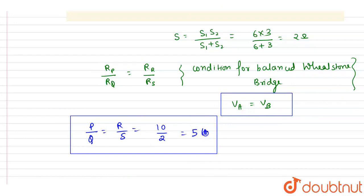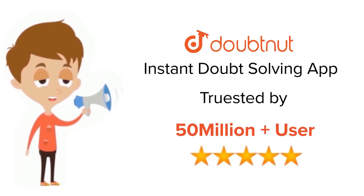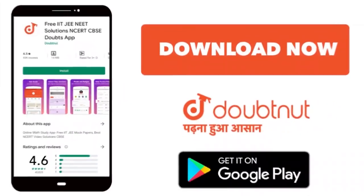So the resistance P and resistance Q should have a ratio of 5, and this is the answer of this question. Thank you. For class 6 to 12, IIT-JEE and NEET level, trusted by more than 5 crore students, download Doubtnet app today.